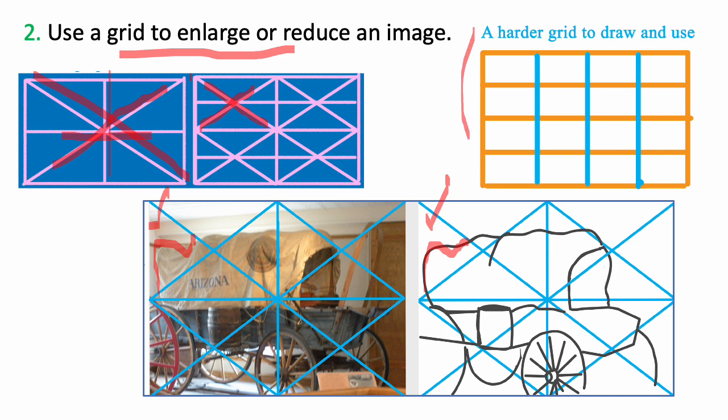Now this is a much harder grid to draw and to use. First of all, you have to do a little math to figure out how many squares you have to put in. And then what if we want to use this square? Well, let's see. It's three over and three down. It's much easier to look at this grid and say, oh, I want this spot. And you know right away it's over here. So I definitely recommend doing your reducing and enlarging using this first grid.